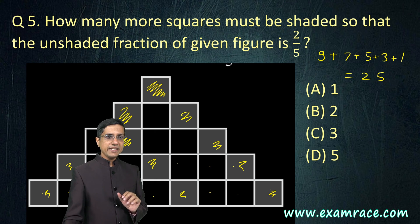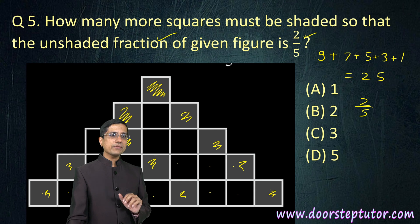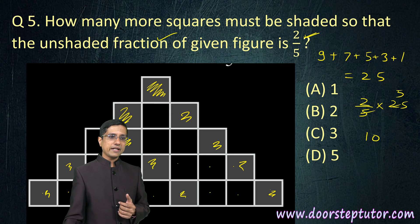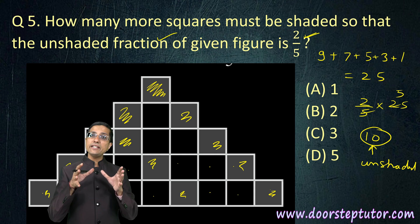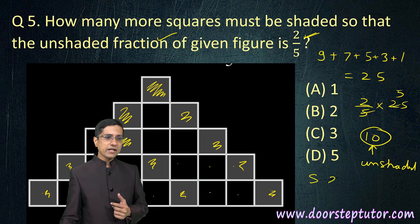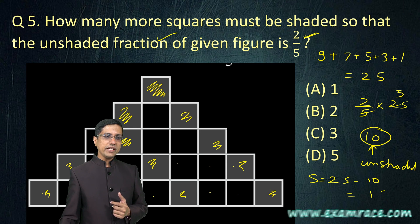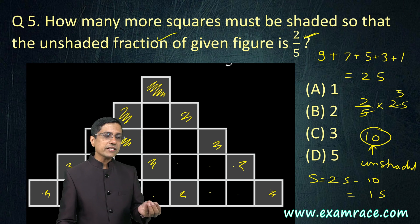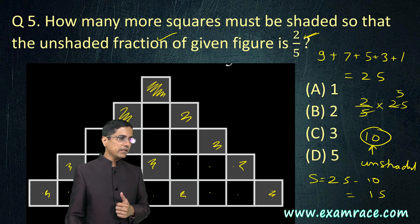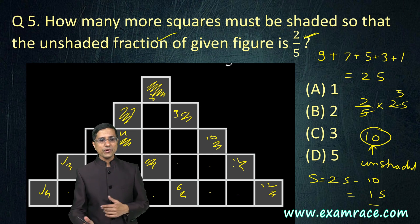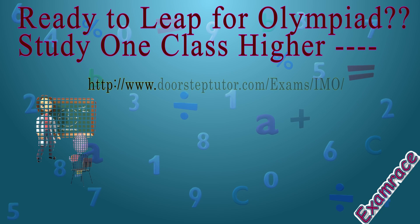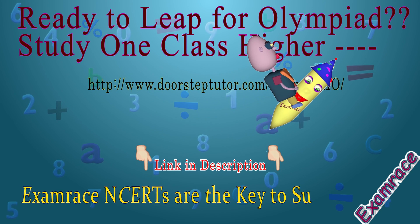From these unshaded is 2 by 5. What is the unshaded fraction? The unshaded fraction is 2 by 5 into 25. So, this becomes 10. Number of unshaded squares, I want them to be 10. So, what is the number of shaded squares? Shaded squares would of course be 25 minus 10 which is equal to 15. This is the number of squares that I want shaded. What is the current number? The current number is 1, 2, 3, 4, 5, 6, 7, 8, 9, 10, 11 and 12. And I want this number to be 15. So, how many more do I need? I need 3 more. Very simple question. Hope you enjoyed it. If you have doubts, don't hesitate to put them in the comments below. Do more practice from the links in the description. Thank you.